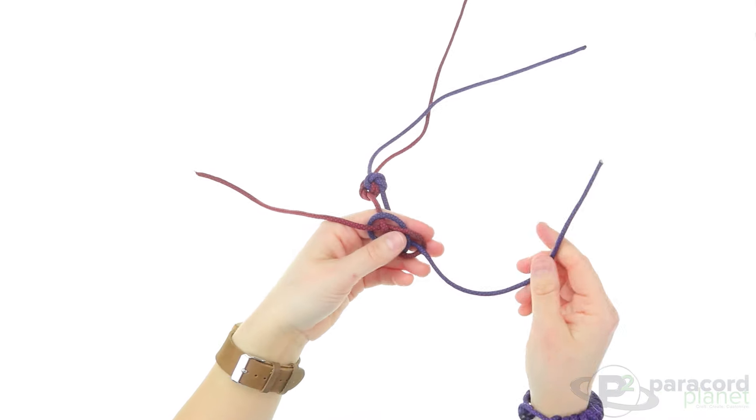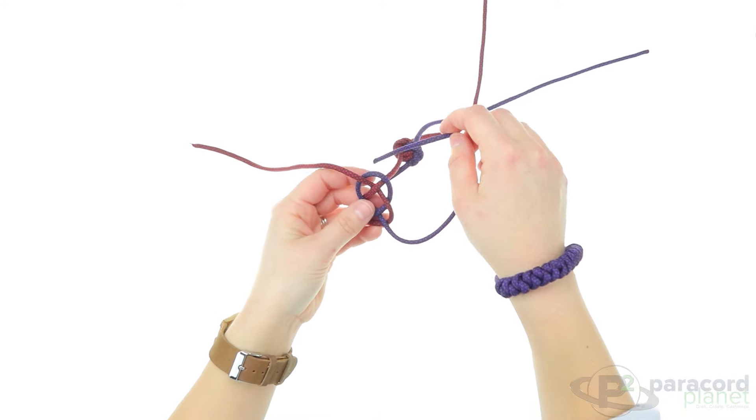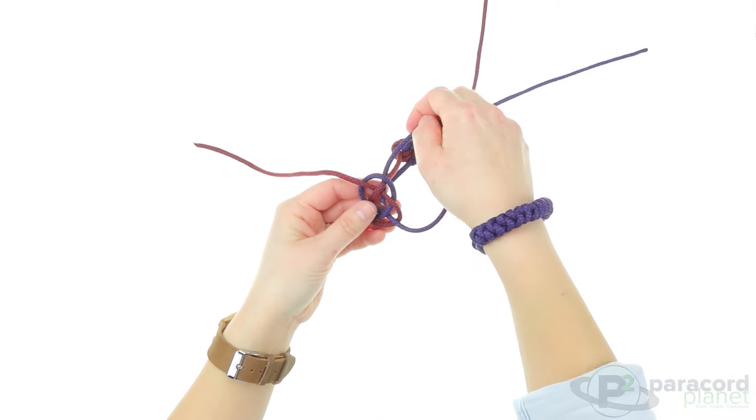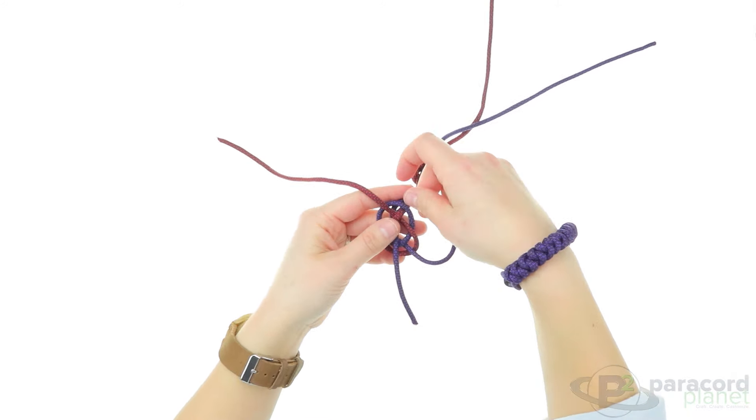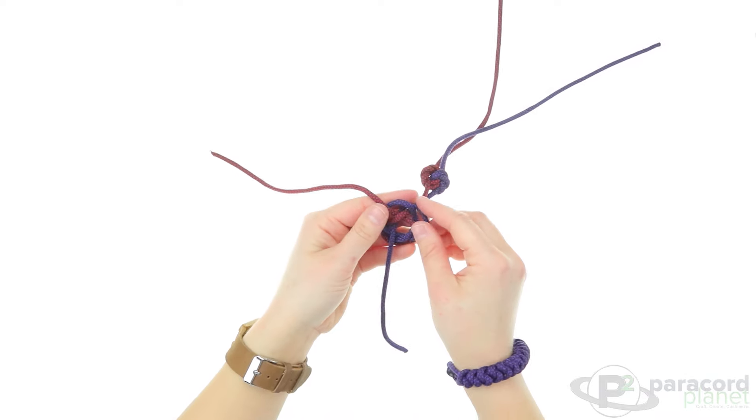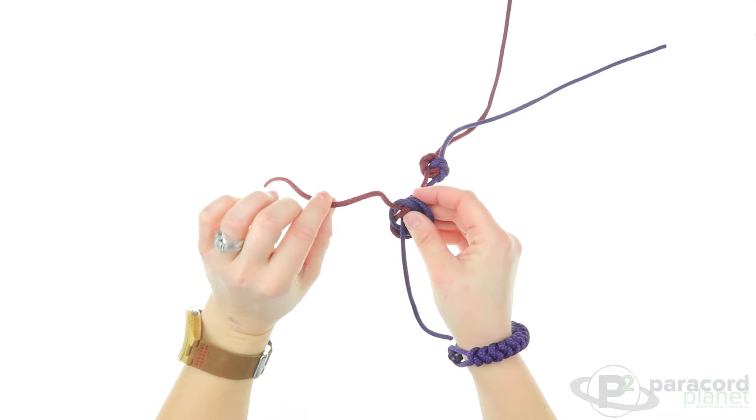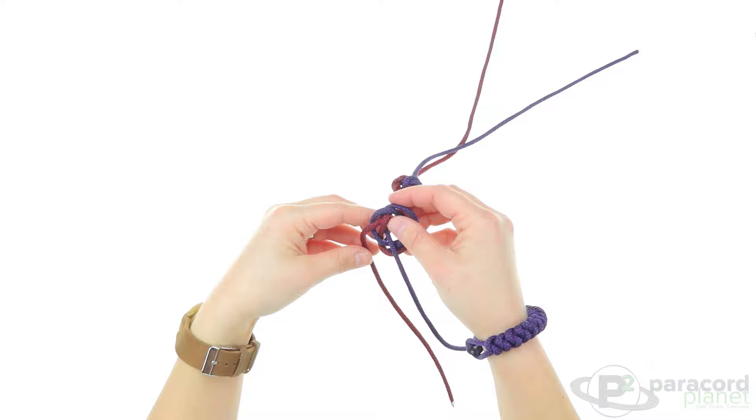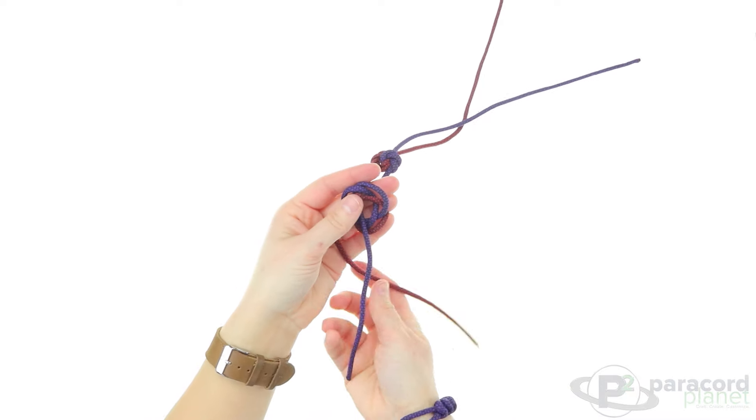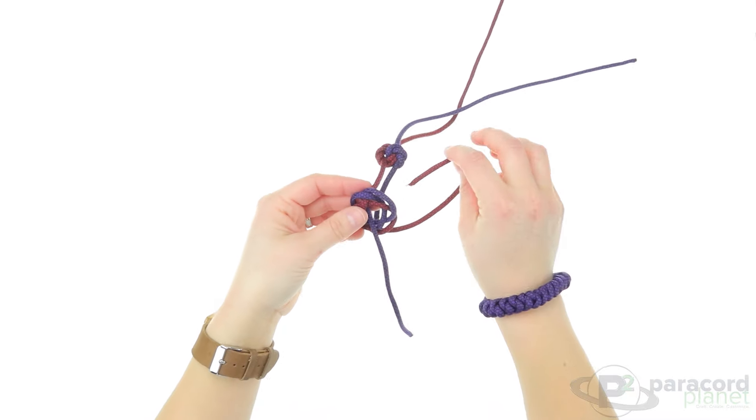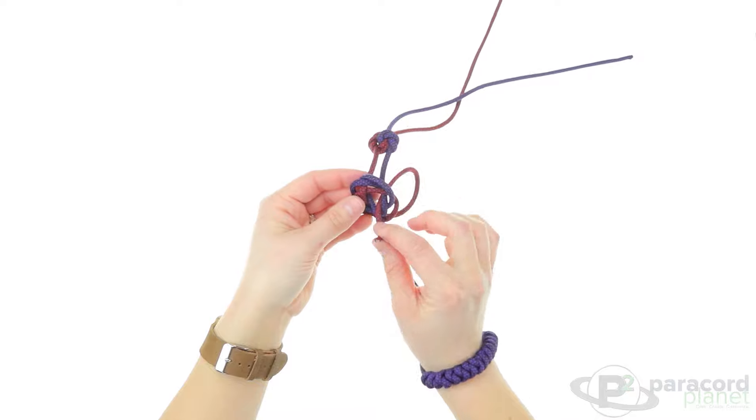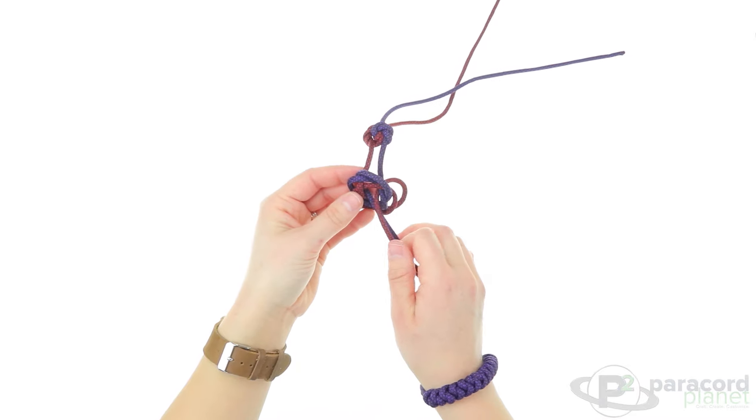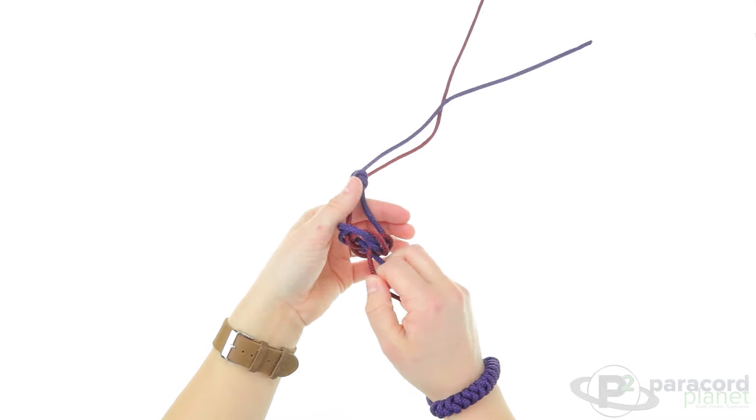Now take this cord, go around these two and then up through the center of your diamond knot. Then take this cord on the left here, go under the one on the right and then up through the knot or the center of the diamond knot, and then you want to just gently pull.